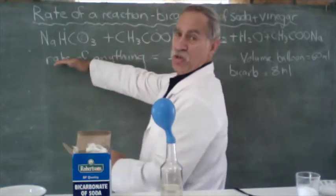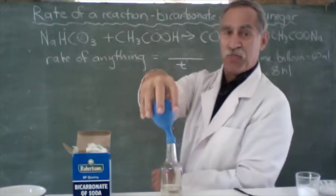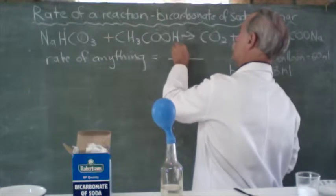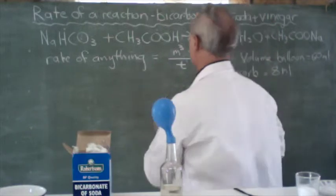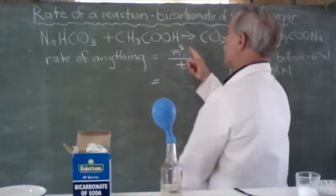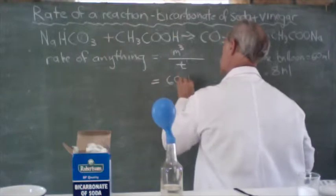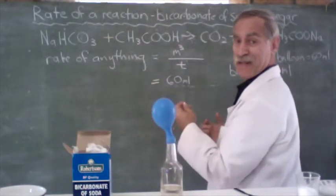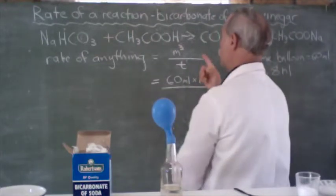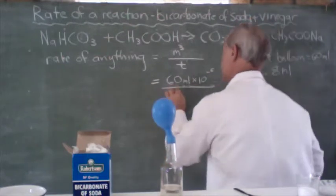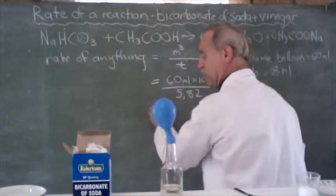So we're going to measure the rate of the reaction. What is produced? We're going to produce a volume of gas in meters cubed in a certain time. And we know that in this first instance, the volume of the balloon I measured was 60 milliliters. Now, we've got to convert that to meters cubed, the SI unit, times 10 to the minus 6. That was the volume produced over the time, which was 5.82 seconds.